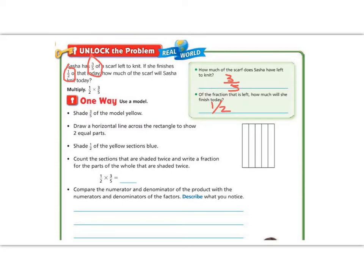First, let's show a model of this. Let's show three fifths of the model yellow. I'm going to go ahead and color it in yellow. If you don't have yellow, that's okay, but it is better if you have two colors. So I'm going to color in three of the five because she has three fifths of the scarf done. Now draw a horizontal line across it to show two equal parts. I'm going to cut it in half and color in one half of the yellow sections blue. If I have six yellow sections because I cut them in half, I'm going to color in half of six, which would be three. One, two, three.